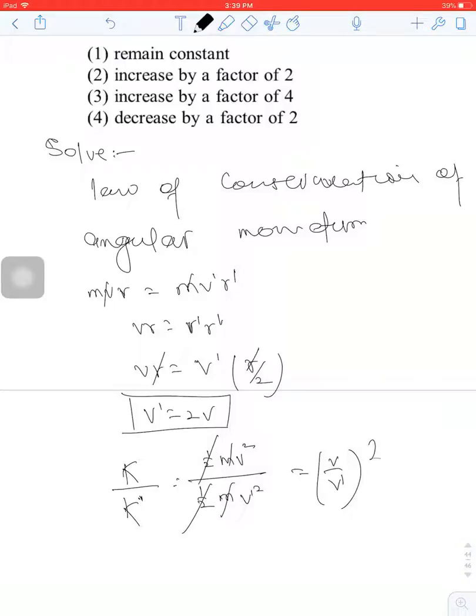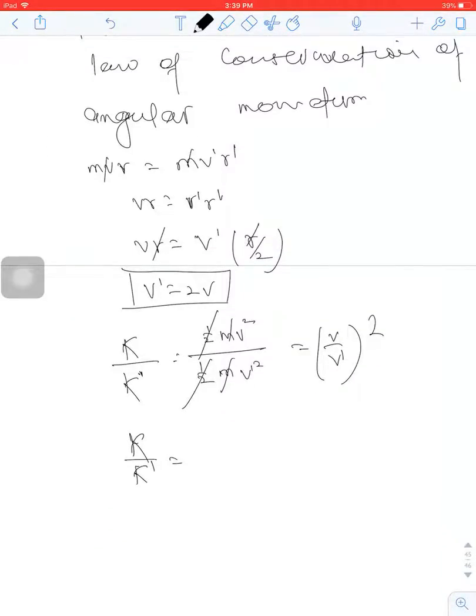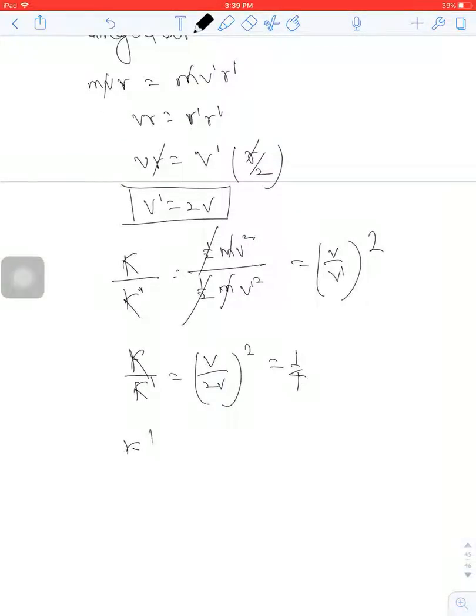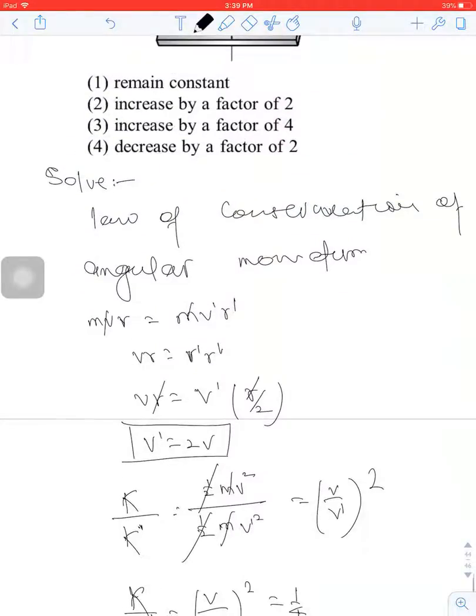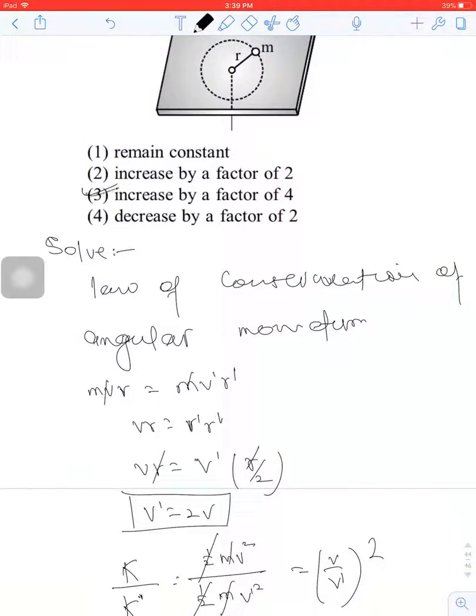K/K' equals (v/v')². Substituting v' equals 2v, we get K/K' equals (v/2v)² equals 1/4. Therefore, K'/K equals 4, meaning the kinetic energy increases by a factor of 4. The answer is option 3.